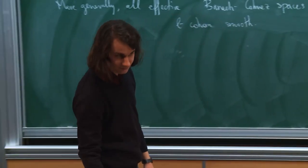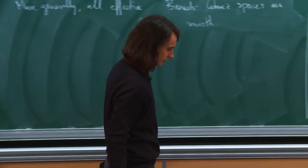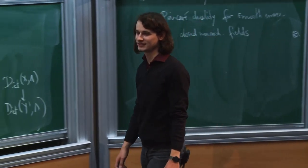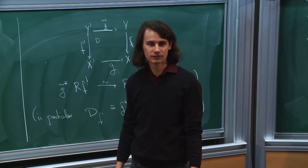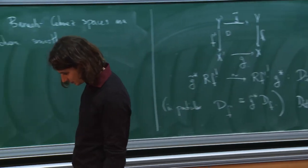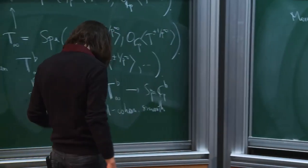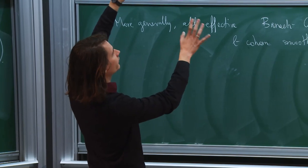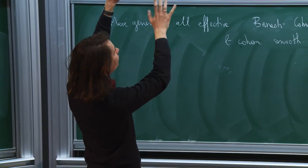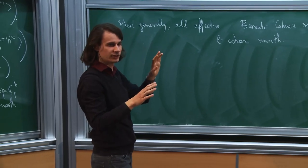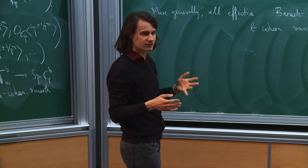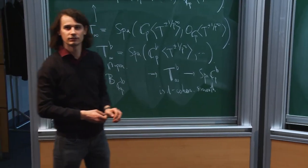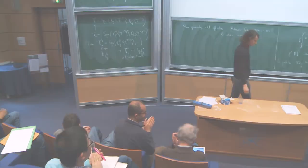Any questions? One question: what about local acyclicity? That will be covered tomorrow. Another question: is there some general result saying that something is compactifiable? Not in general, but the same kind of reduction procedures used for smoothness also work for the compactifiable notion, so in practice it can be checked. With that, let's thank the speaker.